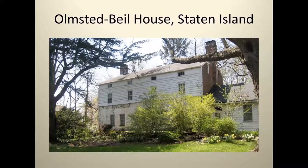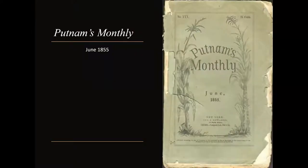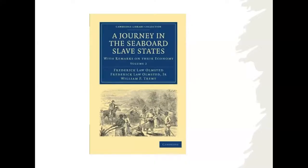In 1850, Frederick travels to Europe and the British Isles in the company of his brother John Hall Olmsted and his good friend Charles Loring Brace. Also in 1850, Olmsted is hired by the New York Times to tour the South and file reports from the field. In 1855, Olmsted becomes partner in the firm that publishes the popular Putnam's Monthly magazine. That business fails in 1857, but that same year Olmsted's first book about the South — A Journey in the Seaboard Slave States — is published.